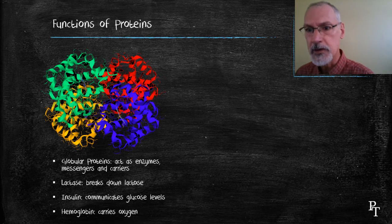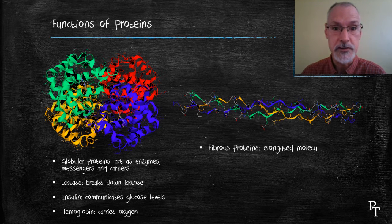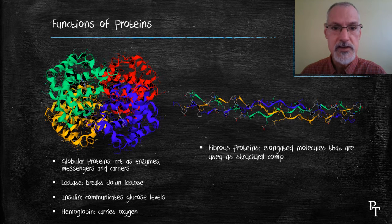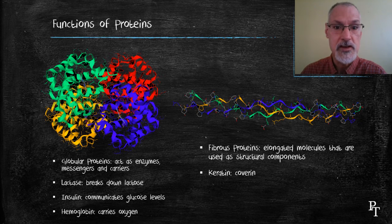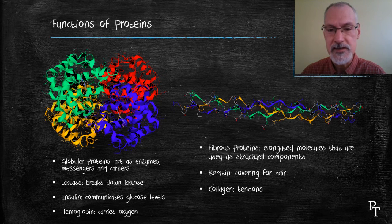But the second type of protein are fibrous proteins. Fibrous proteins are used as building materials and structural components, such as keratin, the covering of hair that's also found in our nails, and collagen, which is found in ligaments and tendons.